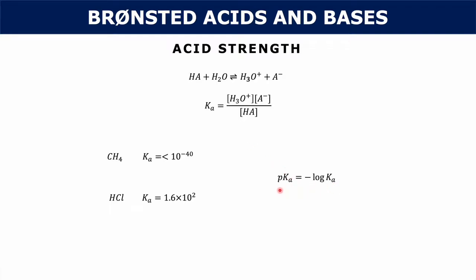We also have pKa, which is the negative log of Ka. The reason we have pKa is because the spectrum of Ka values is really wide — you can have really low or really high Ka values. So we normalize the numbers by taking the negative log, which makes the numbers smaller and easier to deal with, but it also flips the scale: a high pKa value corresponds to a weak acid and a low pKa value corresponds to a strong acid.